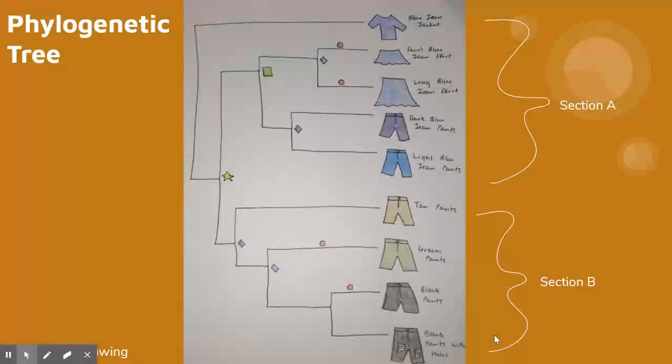This image represents the phylogenetic tree that I have created for the assignment. I have grouped all of the articles of clothing in Section A because they are all blue jeans. Then, they branch off into blue jean skirts and blue jean pants.